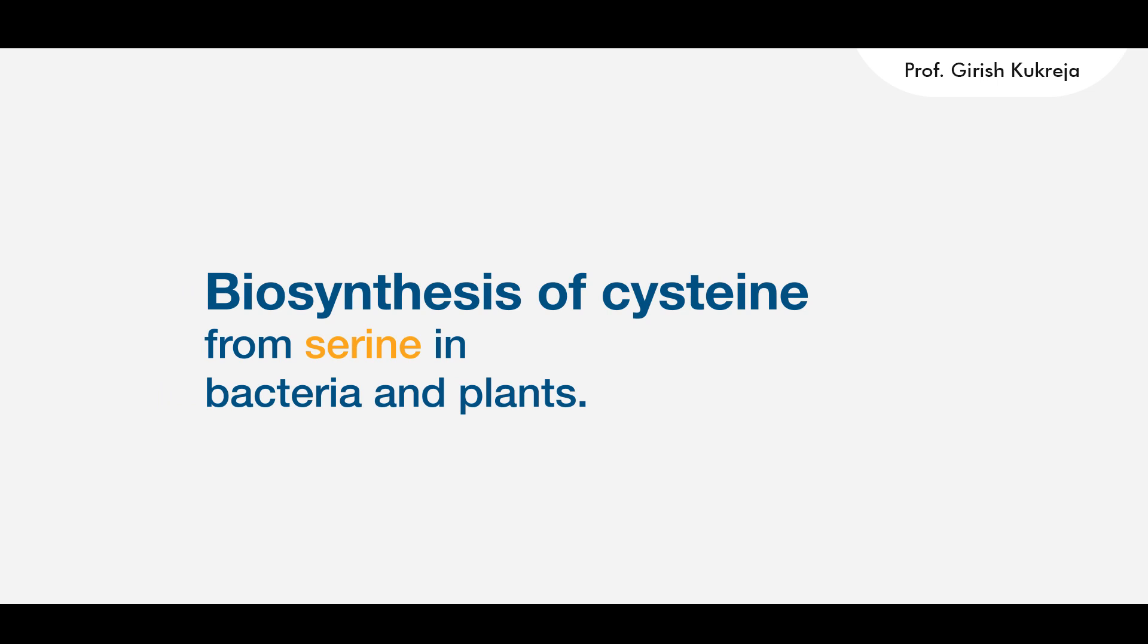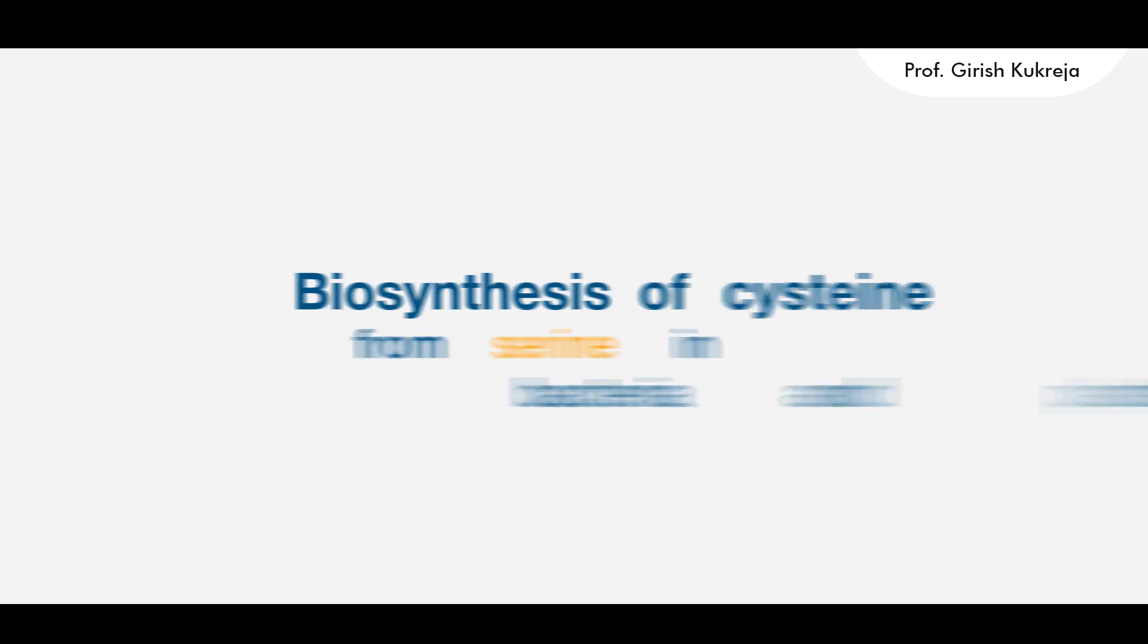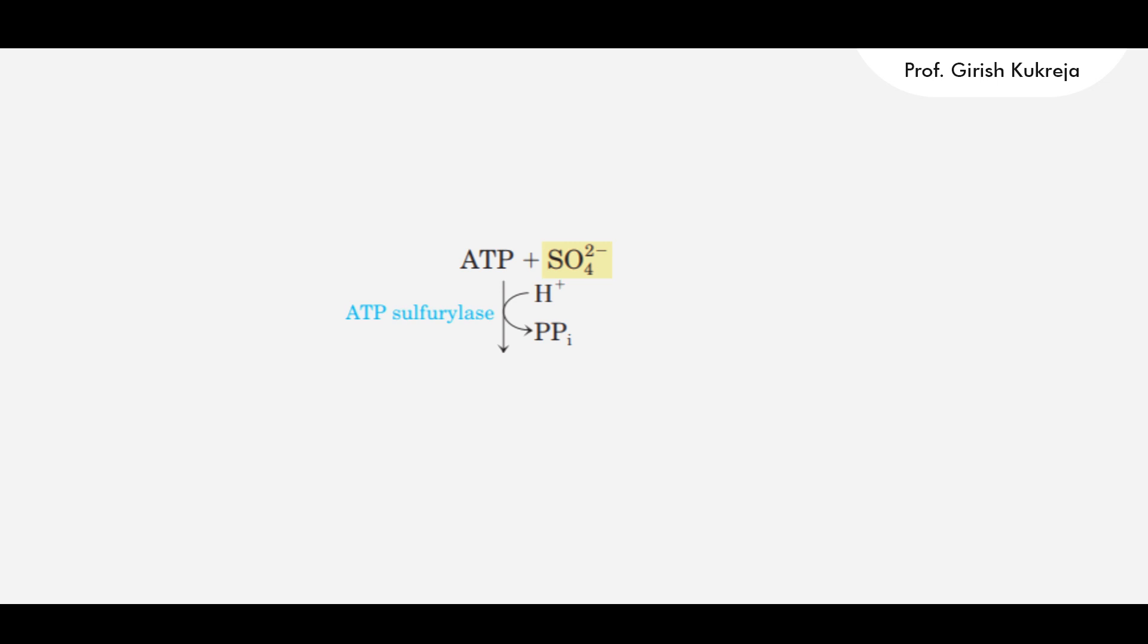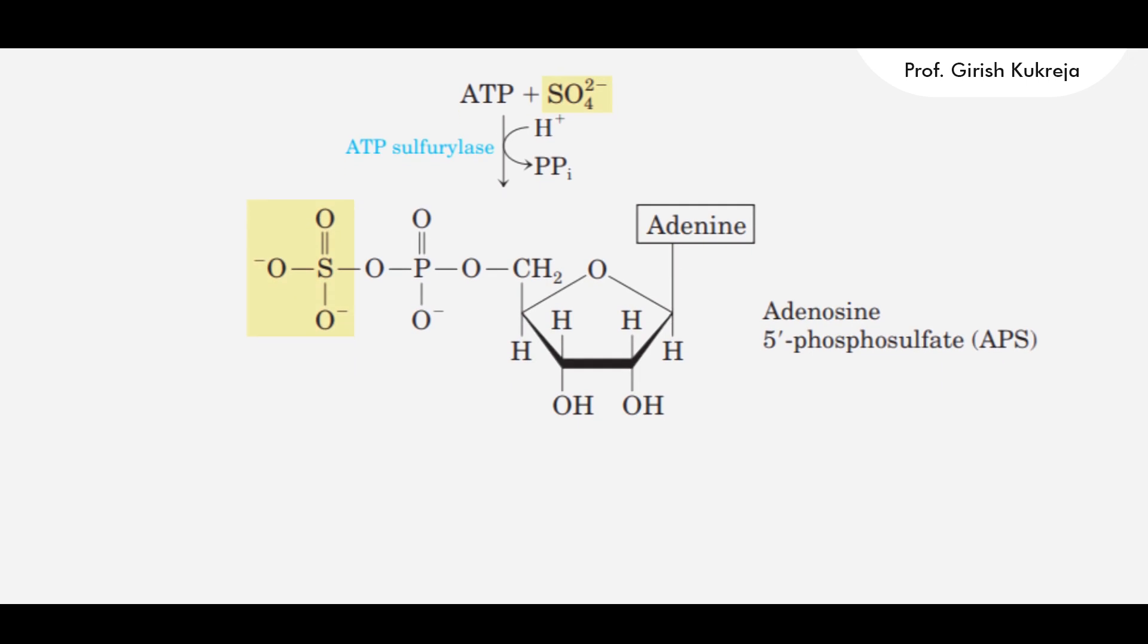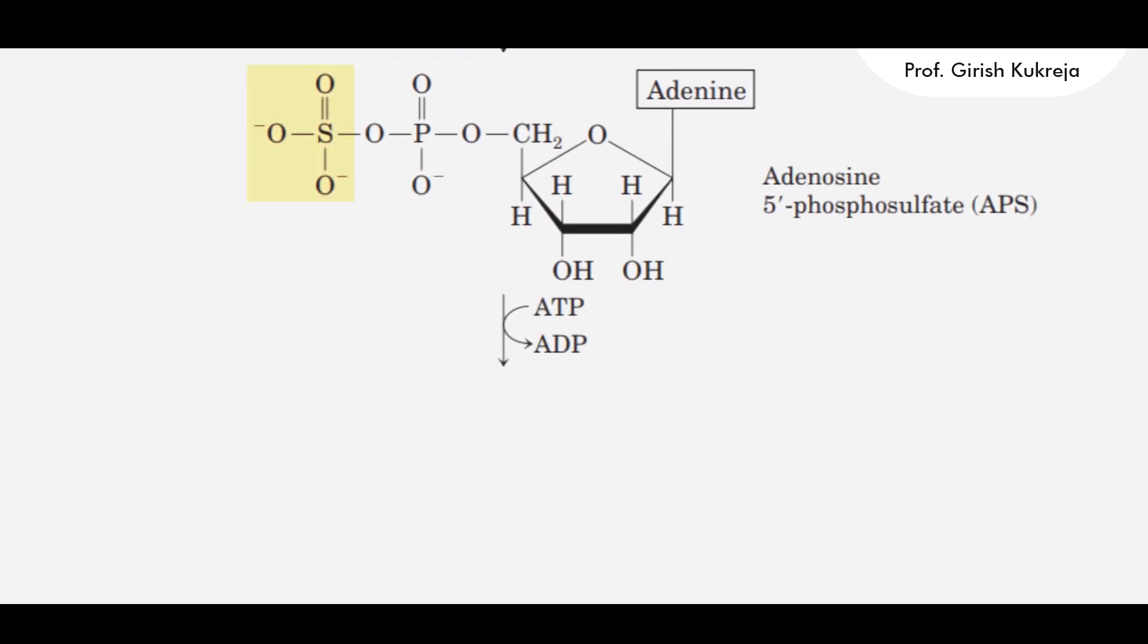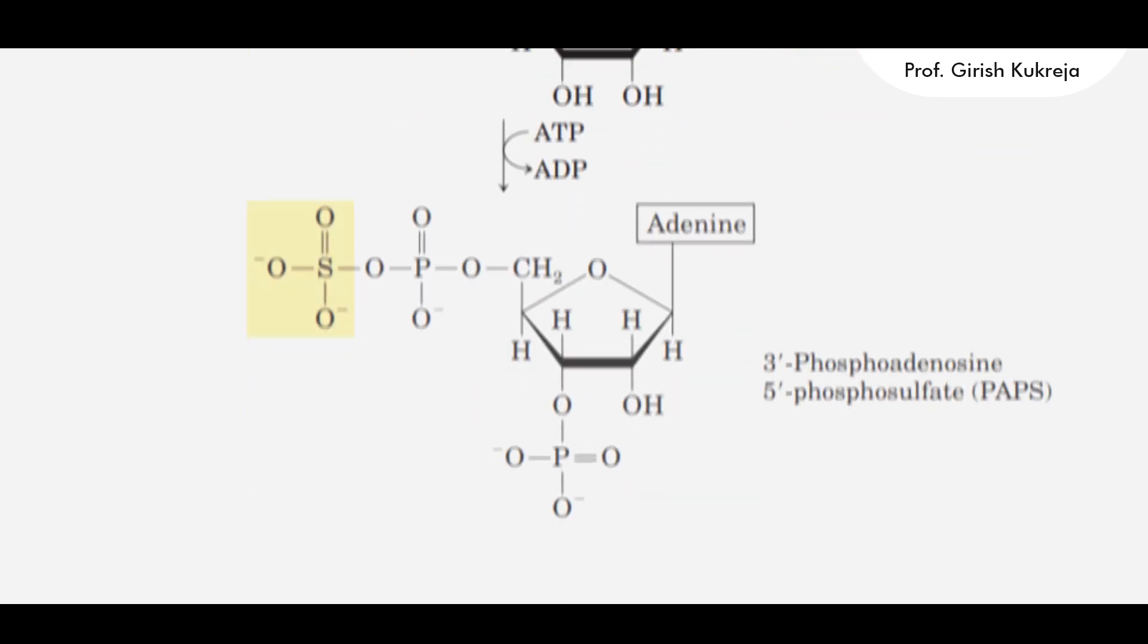The next amino acid in the sequence is cysteine. Formation of cysteine requires the incorporation of reduced sulphur. Plants and bacteria obtain this sulphide from environmental sulphates.